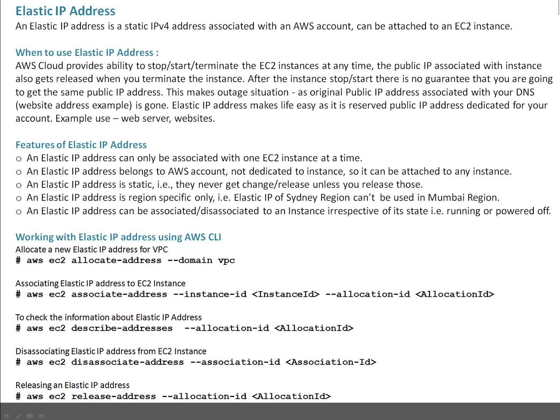What this means is that an elastic IP address of the Sydney region, for example, you can't use it in the Mumbai region, because that's a region-specific IP. An elastic IP address can be associated or disassociated with an instance irrespective of its state. If your instance is stopped, you can still attach the IP. If your instance is running, you can also associate the IP. Similarly, whether the instance is running or stopped, you can disassociate the IP.